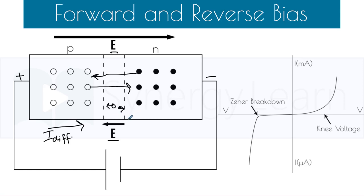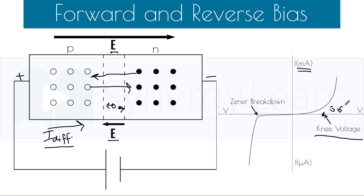The drift current gets suppressed and diffusion current is enhanced, as you can see in the characteristic curve. When the impressed voltage is small there is very small current, but as soon as this voltage becomes comparable to the barrier potential, the current in forward bias shoots up to the order of mA. This voltage is known as knee voltage and is nearly 0.6 V, as the barrier potential for silicon is 0.7 V.